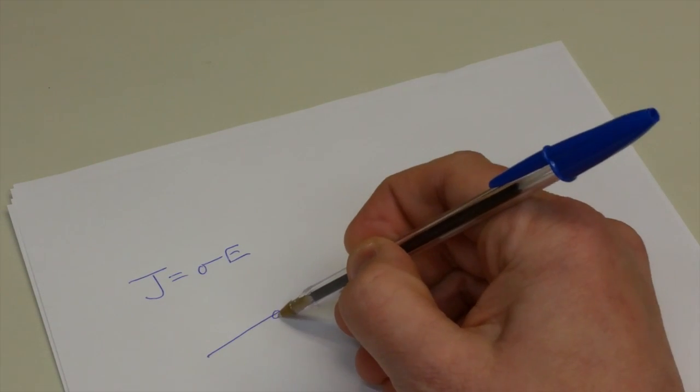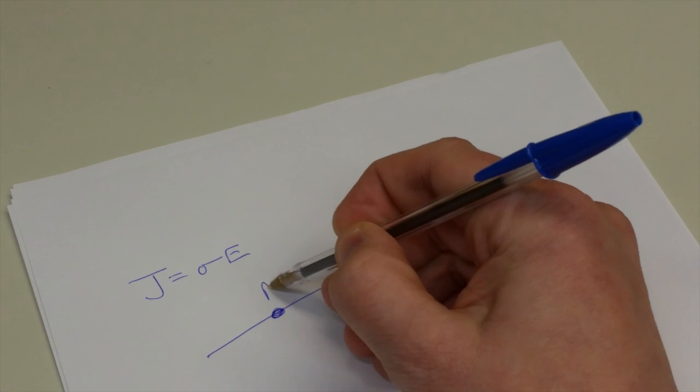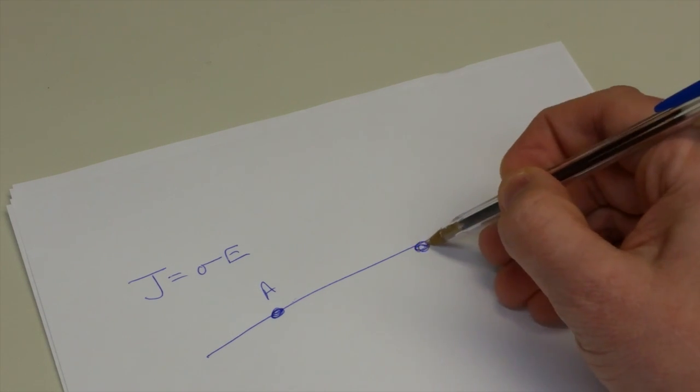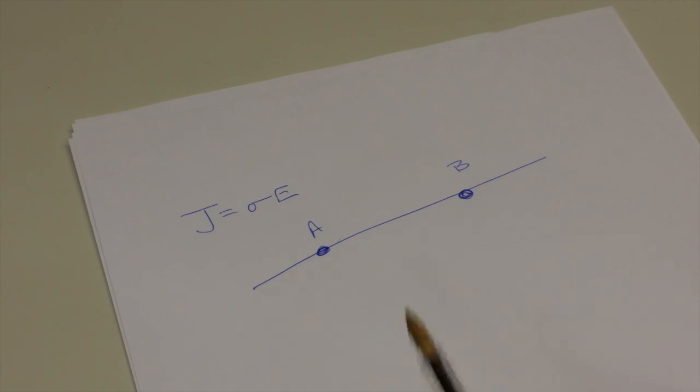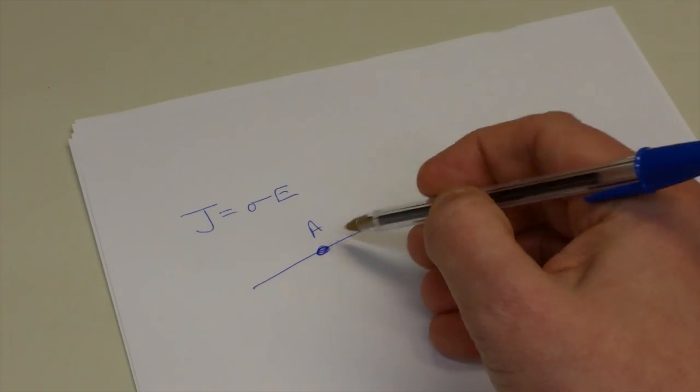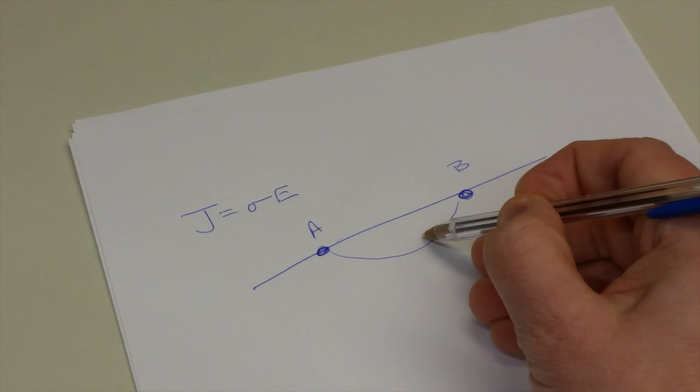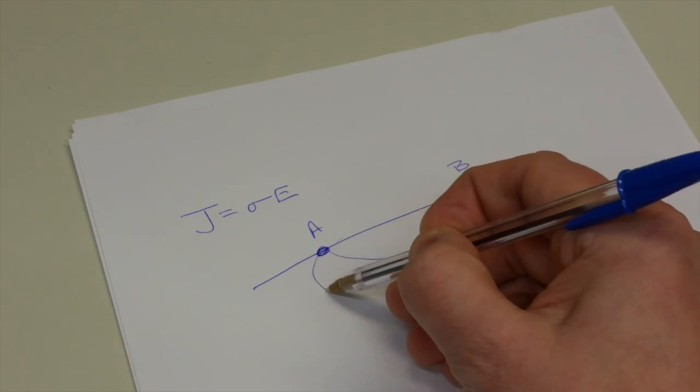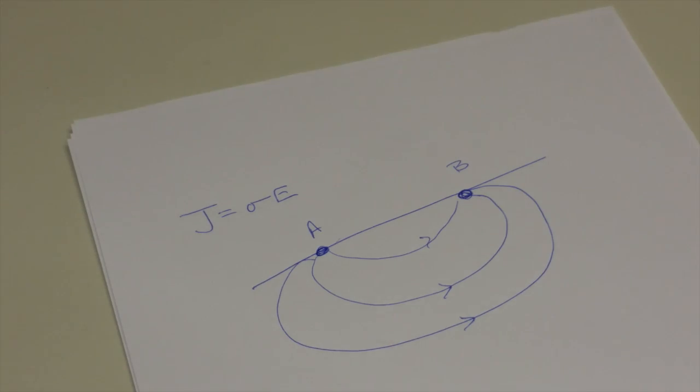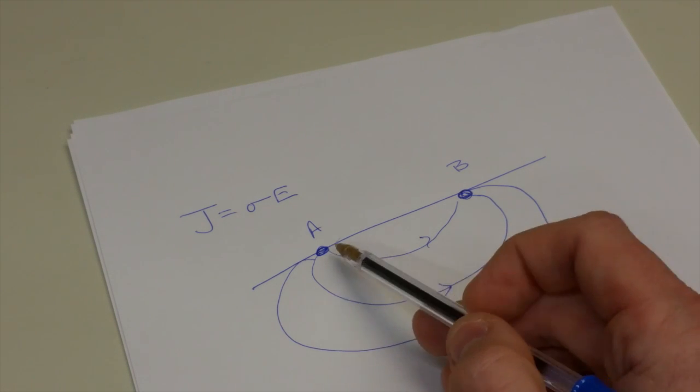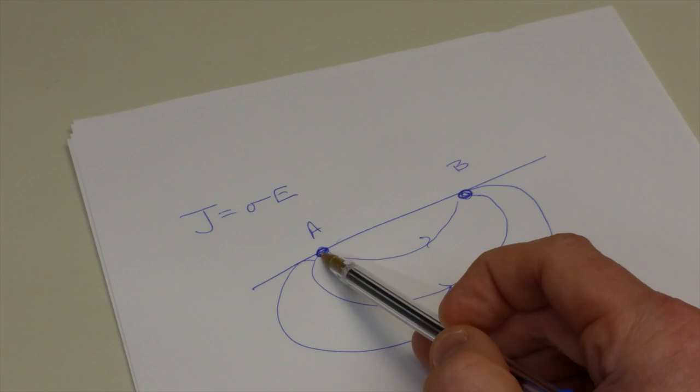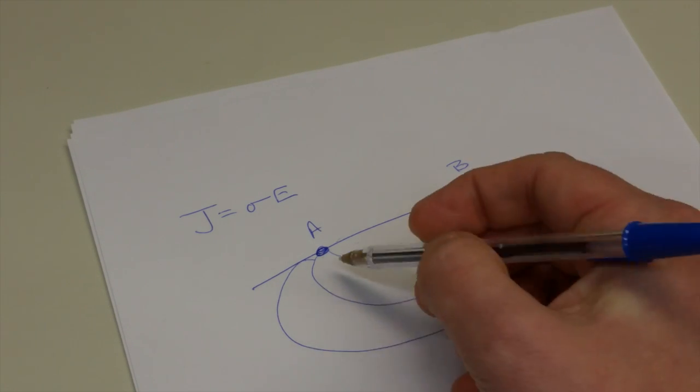Continuing on, we have J equals sigma E. So again, let's consider our electrodes embedded in the Earth, electrodes A and B. And for the time being, we're just going to consider one electrode. Let me redraw the field lines.